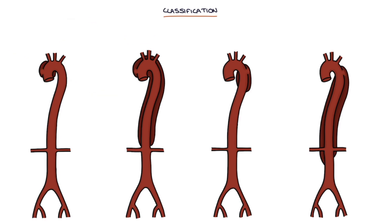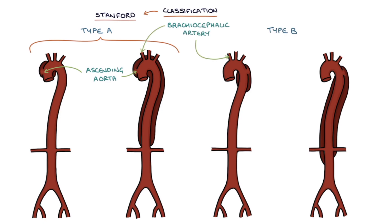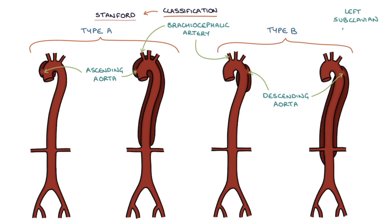There are two classification systems: the Stanford system and the DeBakey system. With the Stanford system, a type A dissection is when the dissection affects the ascending aorta before the brachiocephalic artery. A type B dissection refers to when the dissection affects the descending aorta, after the left subclavian artery.